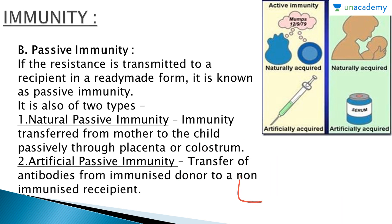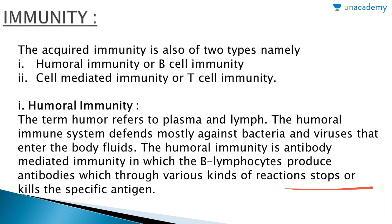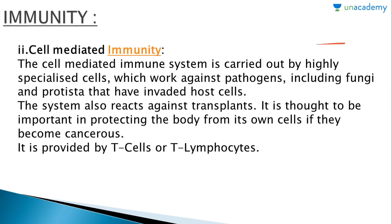Acquired immunity is also of two types: humoral immunity (B cell immunity) and cell-mediated immunity (T cell immunity), provided by B lymphocytes and T lymphocytes respectively. The term 'humor' refers to plasma and lymph. The humoral immune system defends mostly against bacteria and viruses that enter body fluids. It is an antibody-mediated immunity in which B lymphocytes produce antibodies that stop or kill specific antigens.